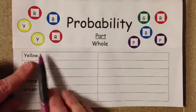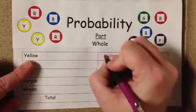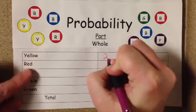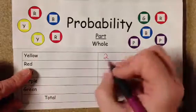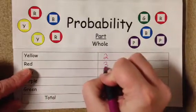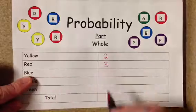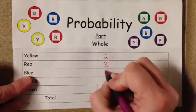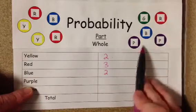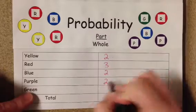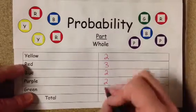For the yellow dots, we have two dots. For the red dots, we have three dots. For the blue dots, we have two. For the purple, we have two. And for the green, we have one.